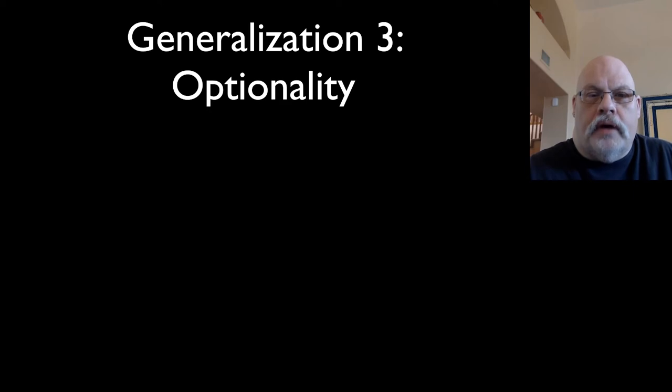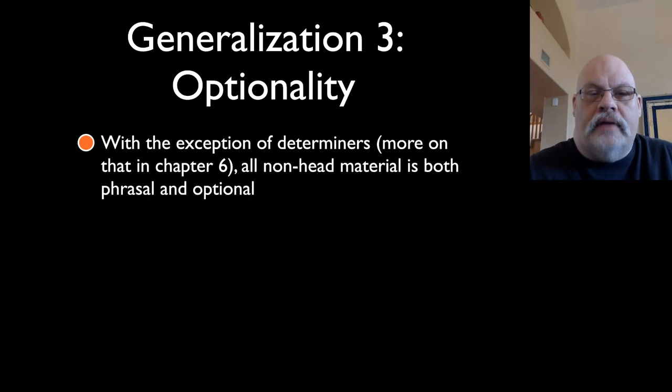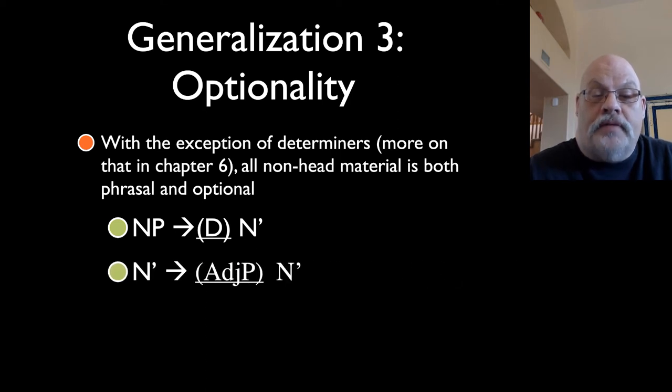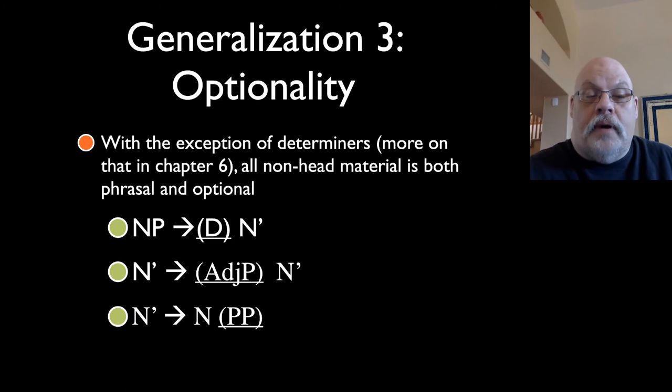The third part of the rule system we've been looking at is the fact that everything that isn't a head is optional. So noun phrase consists of an optional determiner followed by an n-bar. An n-bar consists of an optional adjective phrase followed by an n-bar. An n-bar consists of a noun followed by an optional prepositional phrase. So everything there is optional. And with the exception of determiners, which we're going to come back to, everything is phrasal. So everything that is not a head is a phrase. Determiners are our temporary exception.